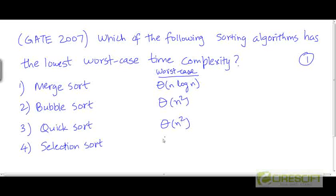The worst-case complexity of selection sort is Θ(n²). So, the lowest worst-case time complexity is that of merge sort.